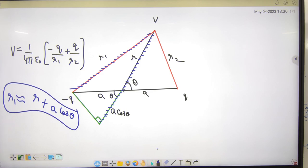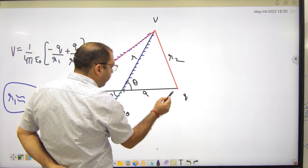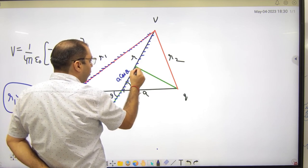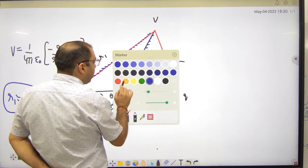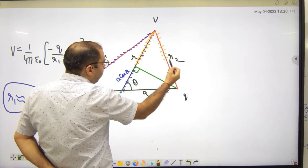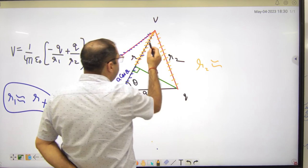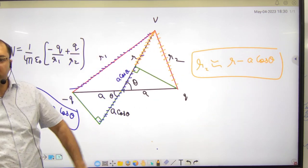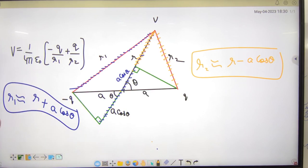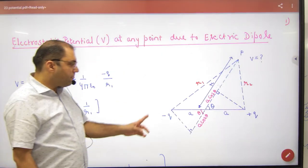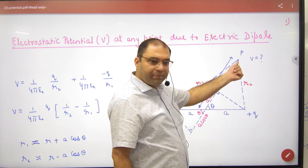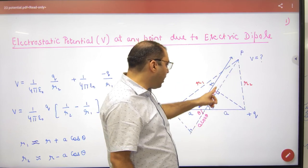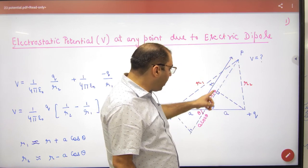Is it clear up to this point? This length and that length are approximately the same. Similarly, on the other side, a perpendicular is also drawn such that if this is a and this angle is θ, then that component also becomes a·cos θ. So r2 is approximately taken as r minus a·cos θ. So: r1 ≈ r + a·cos θ and r2 ≈ r − a·cos θ.